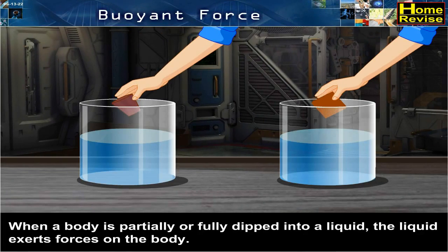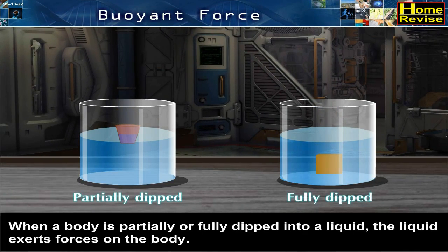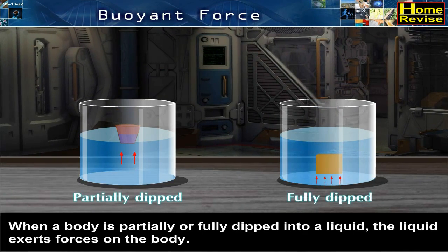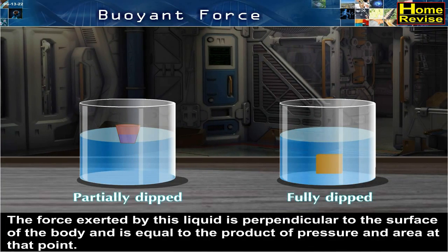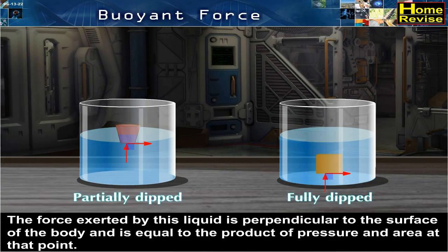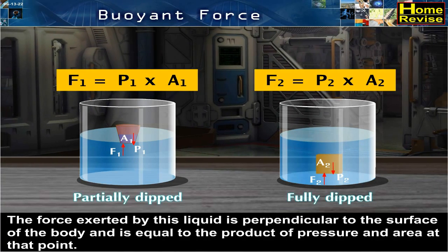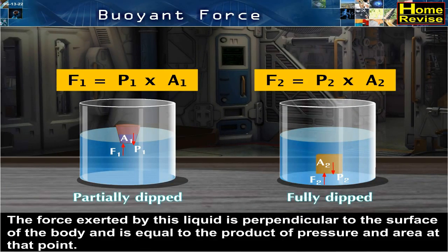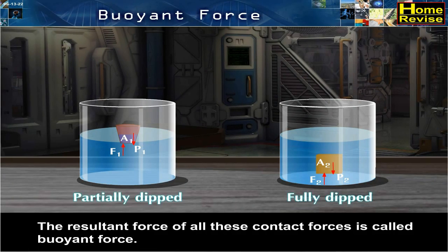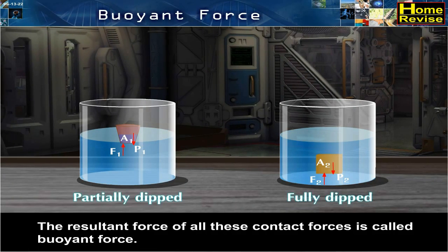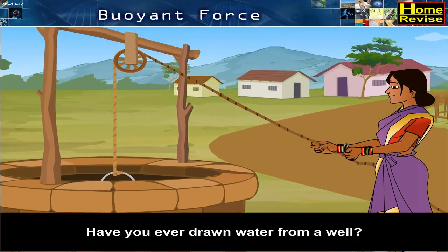When a body is partially or fully dipped into a liquid, the liquid exerts a force perpendicular to the surface of the body, equal to the product of pressure and area at that point. The resultant force of all these contact forces is called buoyant force.